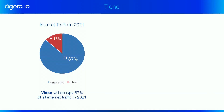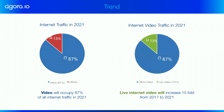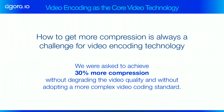A study by Cisco predicts video will occupy 87% of total internet traffic in year 2021, and among that, live internet video will increase 15-fold from year 2017 to year 2021. And behind this rapid growth is the crucial enabler — the video encoder — and its progress over the years has enabled this rapid growth of internet video.